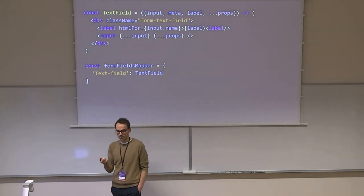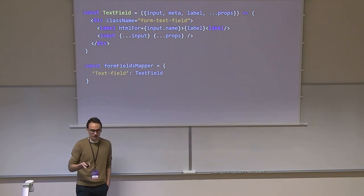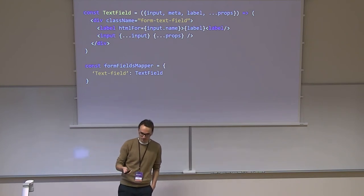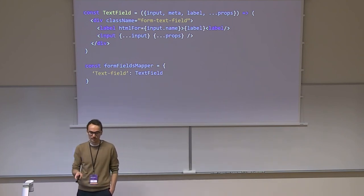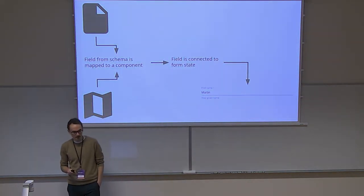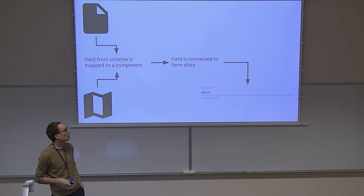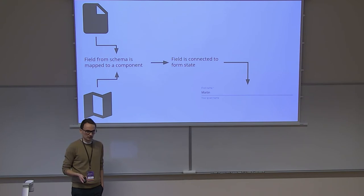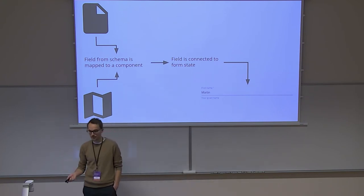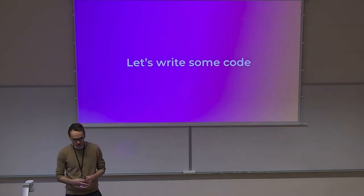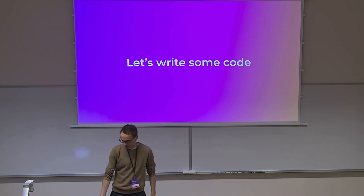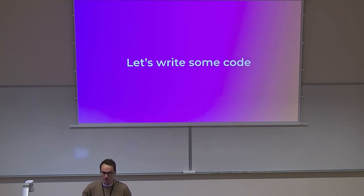This is how the component mapper looks. It's just a simple React component implementation — the form-fields mapper has a text-field constant as the key, and the React component as the value. You take the component mapper, take the schema, put it into the renderer — the renderer picks everything it needs, connects fields to state, passes props, and renders. Let me show some coding examples.